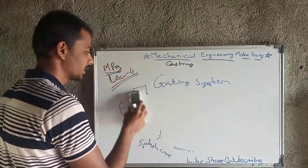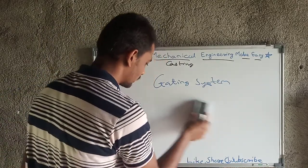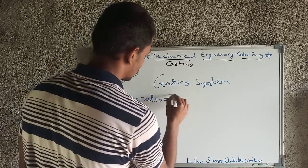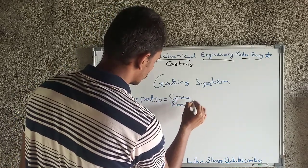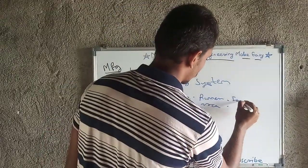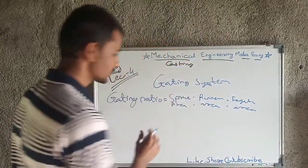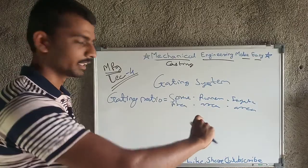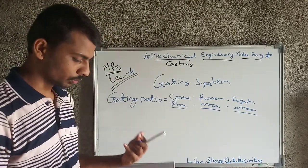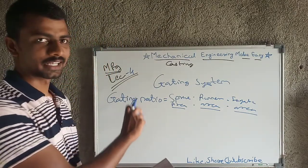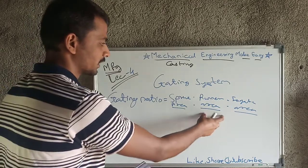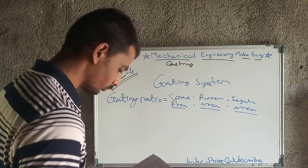The next point is gating ratio. As we have seen: first sprue, then runner, then ingate. So the gating ratio is sprue area to runner area to ingate area. This is the formula for gating ratio. In exams, a question may ask for the gating ratio, or give values like 2:4:2, from which we can determine the area of sprue or runner.